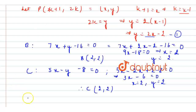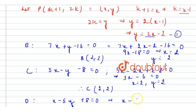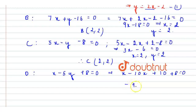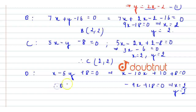Line D has the equation x - 5y + 8 = 0. Substituting y = 2x - 2, it becomes x - 5(2x - 2) + 8 = 0, which gives x - 10x + 10 + 8 = 0, so -9x + 18 = 0. Therefore x = 2 and y = 2, and the coordinates of point D are also (2, 2).